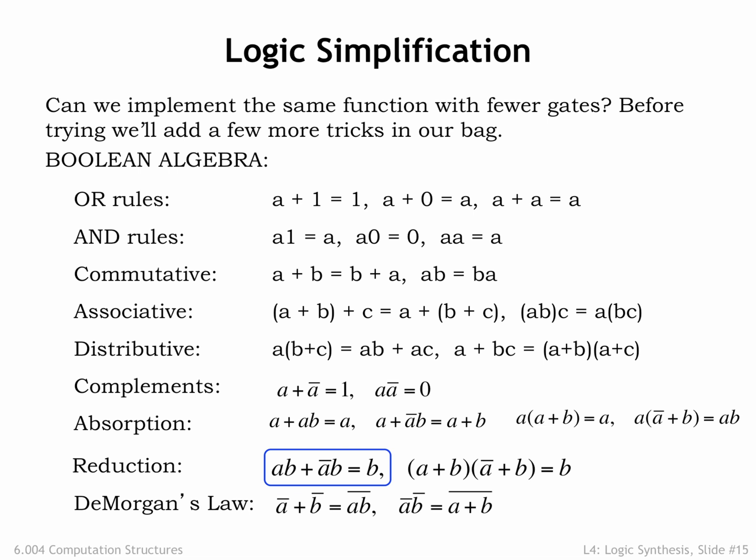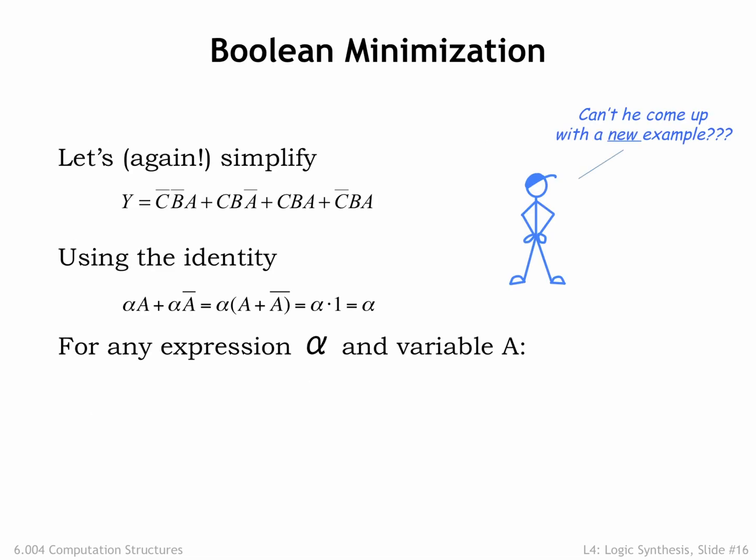Let's see how we might use that identity to simplify a sum-of-products expression. Here's the equation from the start of this chapter involving four product terms. We'll use a variant of the reduction identity involving a Boolean expression alpha and a single variable A. Looking at the product terms, the middle two offer an opportunity to apply the reduction identity if we let alpha be the expression C and B.